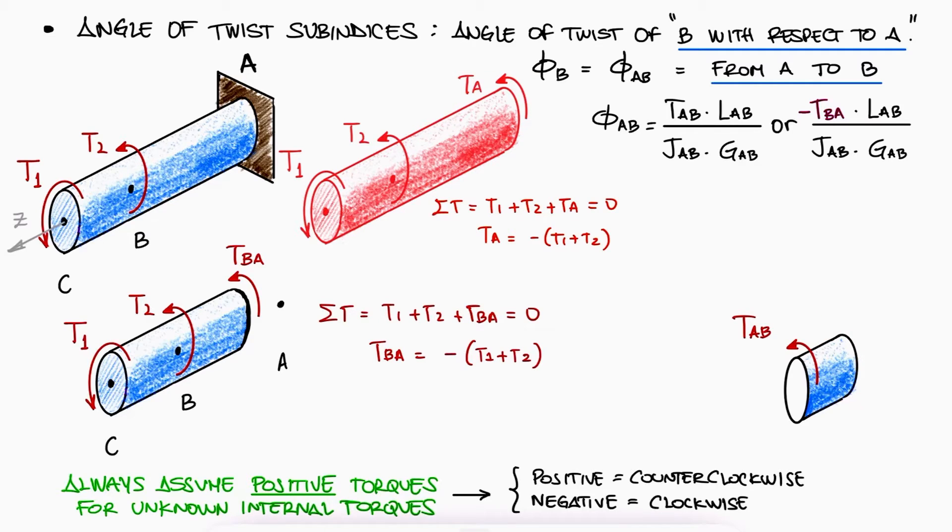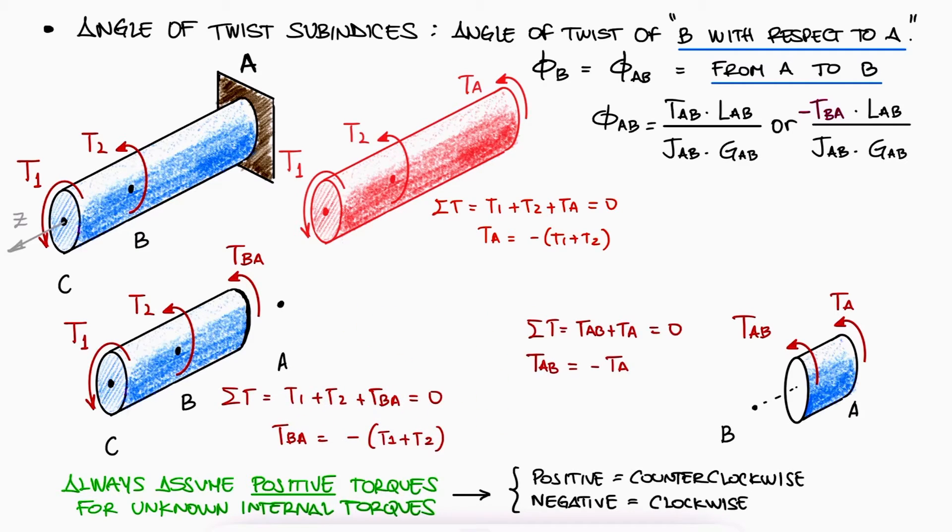Solving for TA and going back to the cut between A and B, we can find TAB in terms of TA, which we now know it's minus T1 plus T2, which shows us that TAB is positive and therefore a counterclockwise torque equal to T1 plus T2.